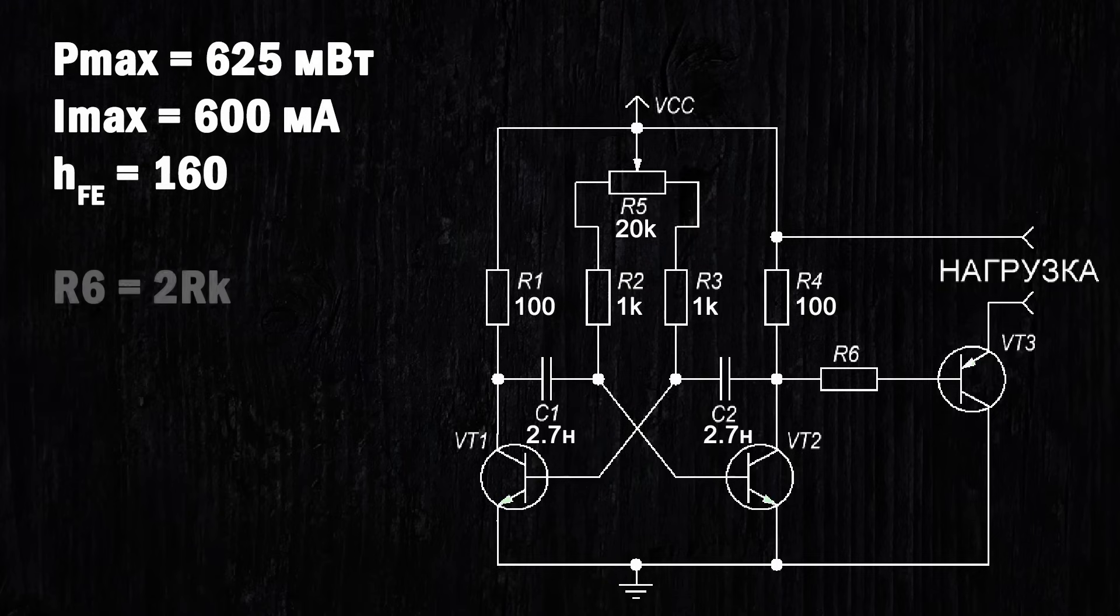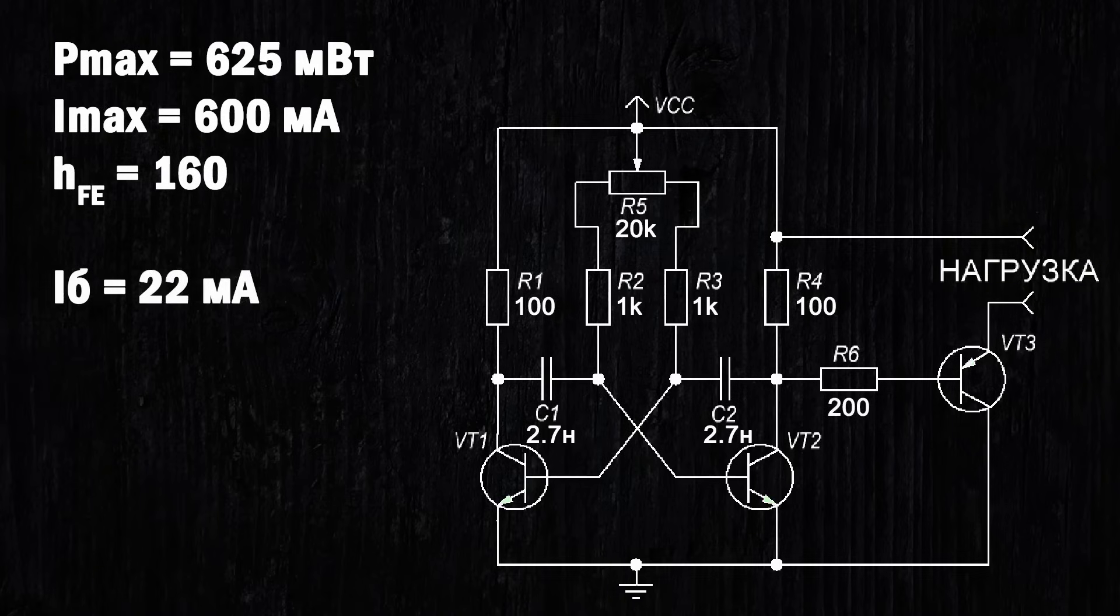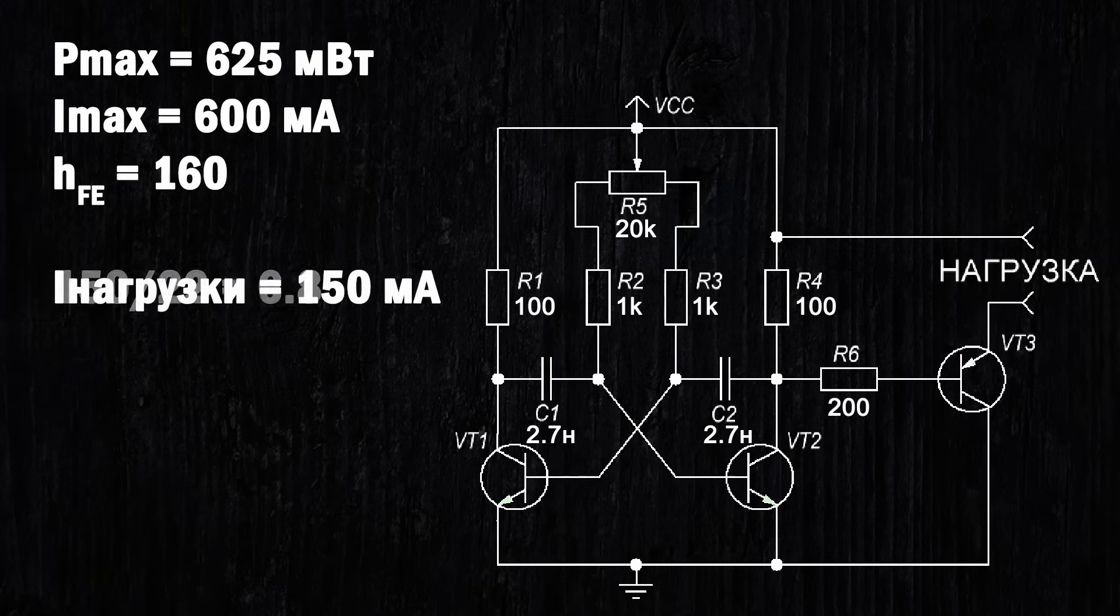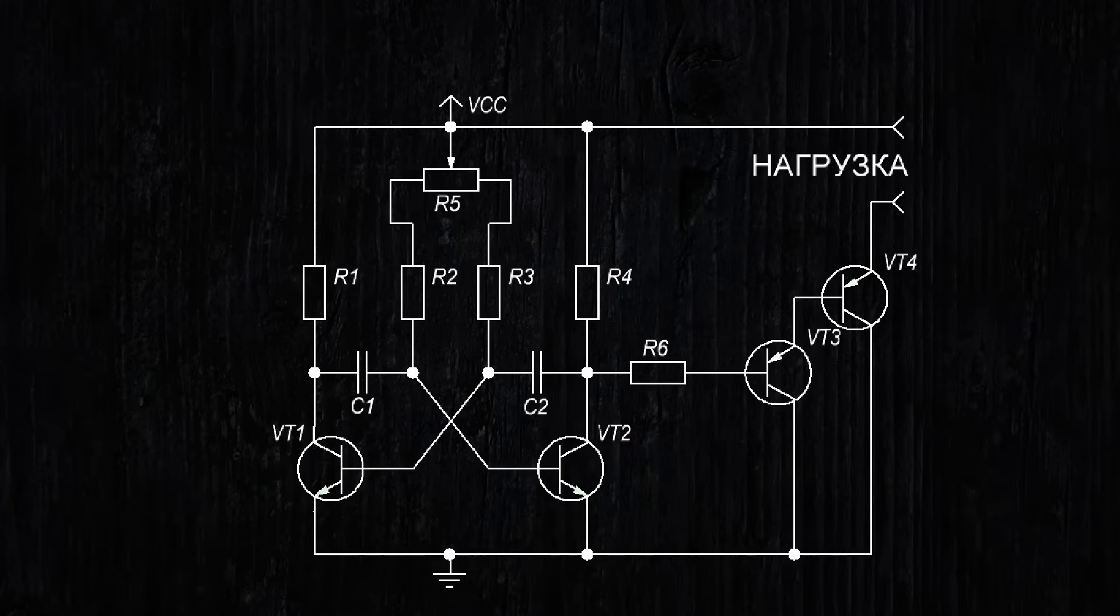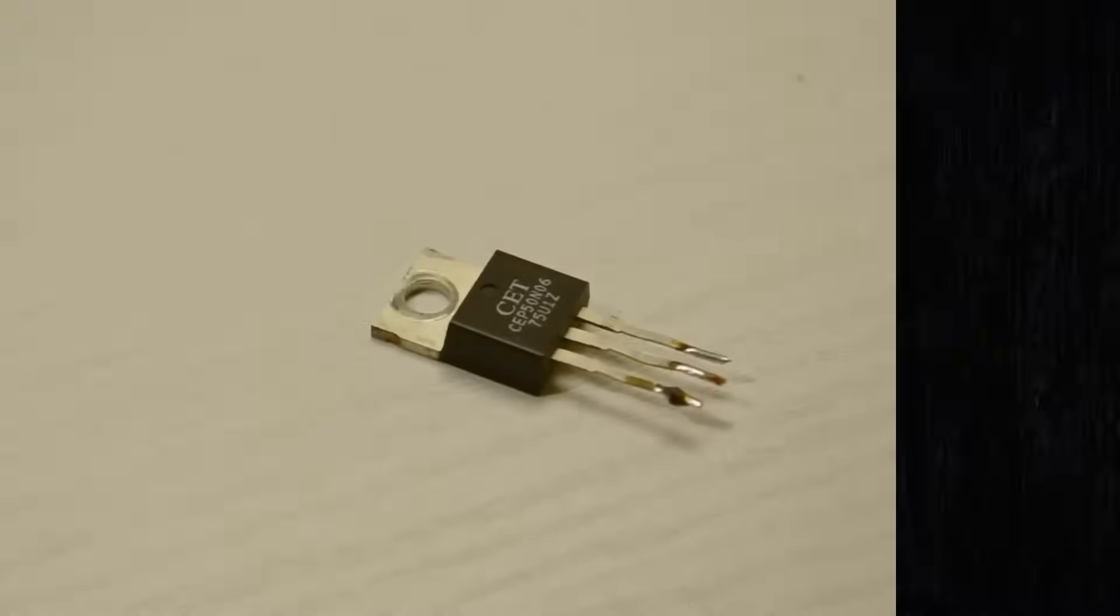Now we move on to calculating the resistor for the switch. It should be chosen to be twice the collector resistor. Next, we obtain the base current value, after which we need to determine the load current. Let's say I want to control a fan with a current of 150 milliamps. Therefore, the collector current should be 10 times the base current. So you can use almost any PNP transistor as a switch. If a higher load current is needed, you can use the Darlington pair or powerful MOSFET transistors.